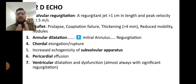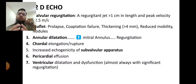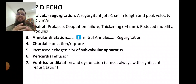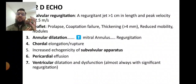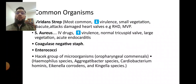Key echocardiographic measurements include: regurgitation jet more than 1 cm, blood flow velocity of 2.5 m/s, leaflet thickening more than 4 mm as significant, prolapse and leaflet thickening, annular dilatation due to regurgitation, chordal elongation or rupture, subvalvular apparatus abnormalities, ventricular dilatation, and dysfunction—usually due to regurgitation.